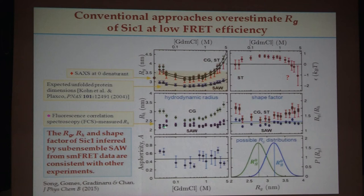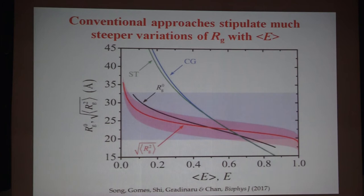So let me remind you once again what we found. If we use this sub-ensemble approach — basically without any assumptions — you end up with a variation of FRET efficiency E with R_G that is pretty mild. But if you use the conventional method, it's going to be very sharp, and this would lead to unphysical results.